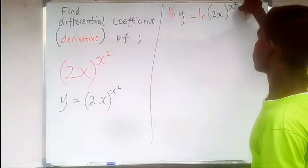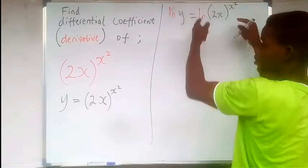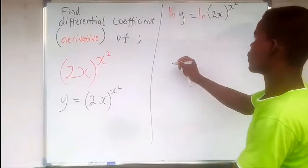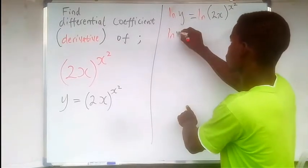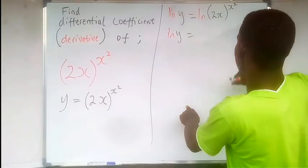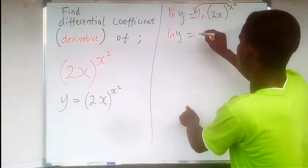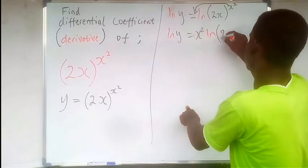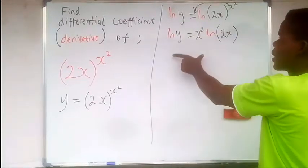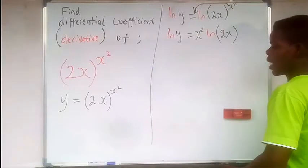Take note that since this is ln, logarithm of it, the number to the power, we'll just take the power backward. So we do that, we have ln of y, ln y, to be equal to - we take this x² backward - so we're going to have x² ln of this function, 2x. So after splitting it this way, let's find the derivative of the left-hand side and right-hand side.